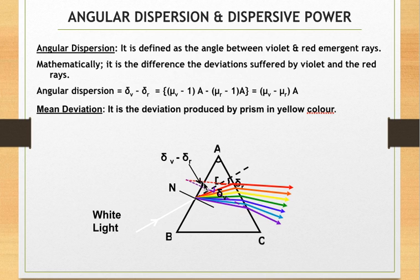This angle here shows angular dispersion. It is equal to delta v minus delta r, that is deviation for violet color minus deviation for red color. Using the expression for deviation as mu minus 1 into A, you can write the relation delta v minus delta r as this, or simplification leads you to mu v minus mu r into A.